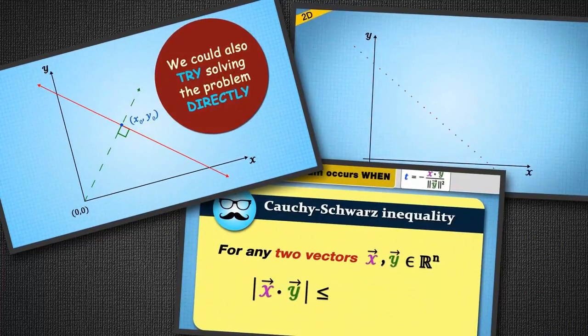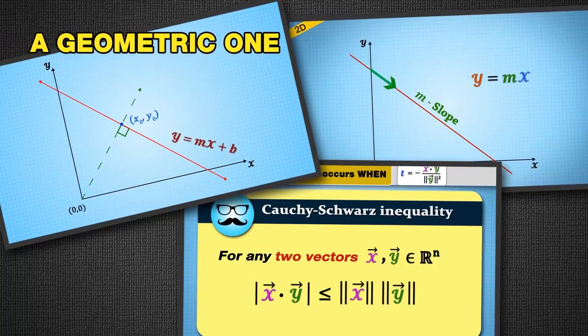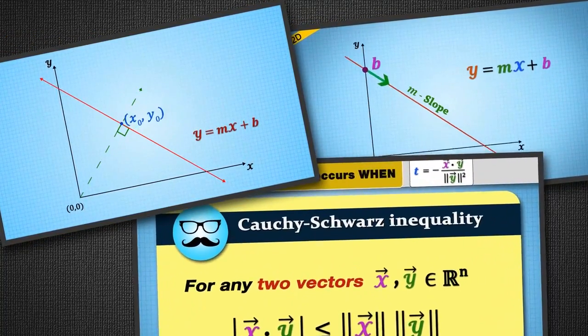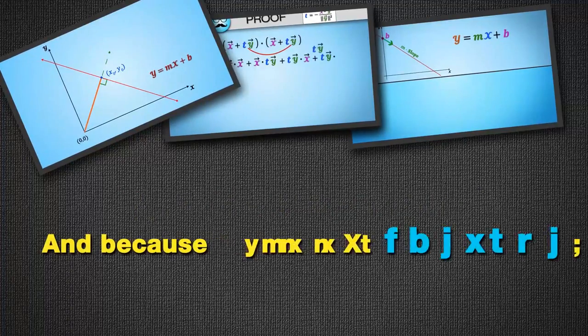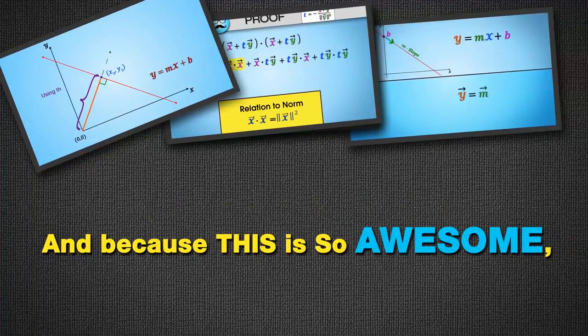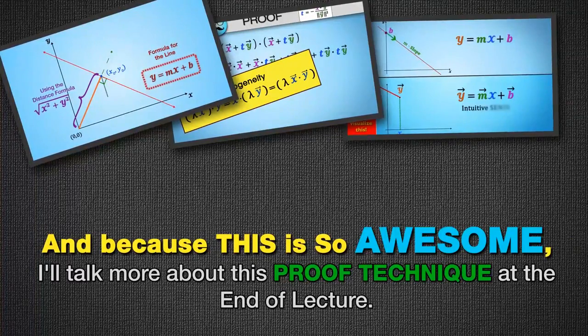Remarkably, we just used a completely different problem, a geometric one, to prove the Cauchy-Schwarz inequality. That's pretty cool. And because this is so awesome, I'll talk more about this proof technique at the end of the lecture.